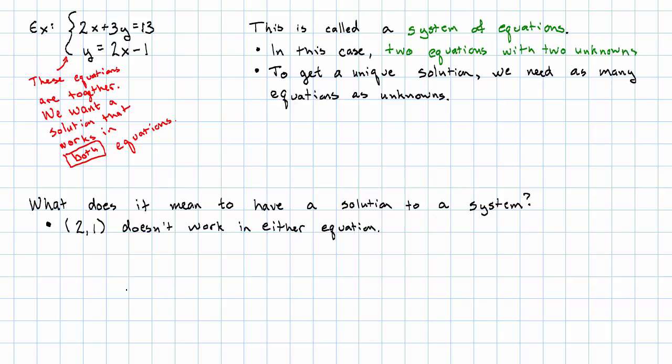Notice that to pick a point at random, 2, 1 doesn't work in either equation. Plugging into the first equation, 2 times 2 plus 3 times 1, that's 7, which is not 13.